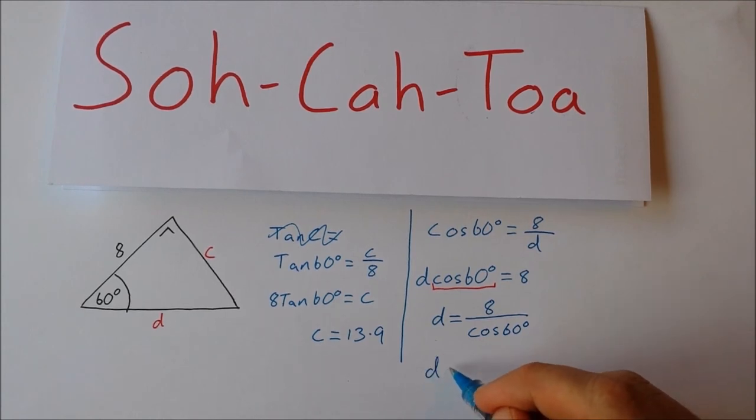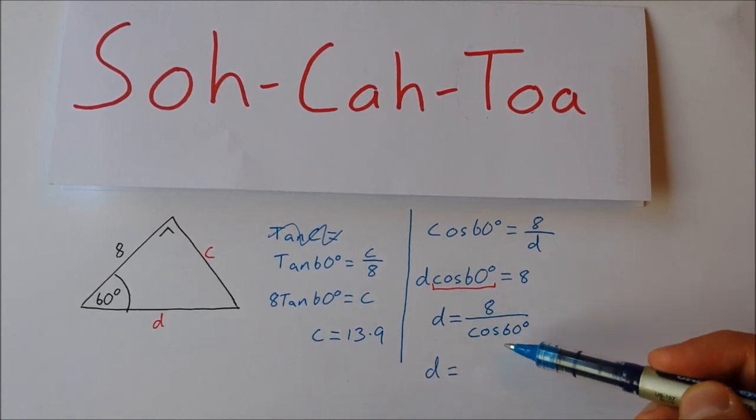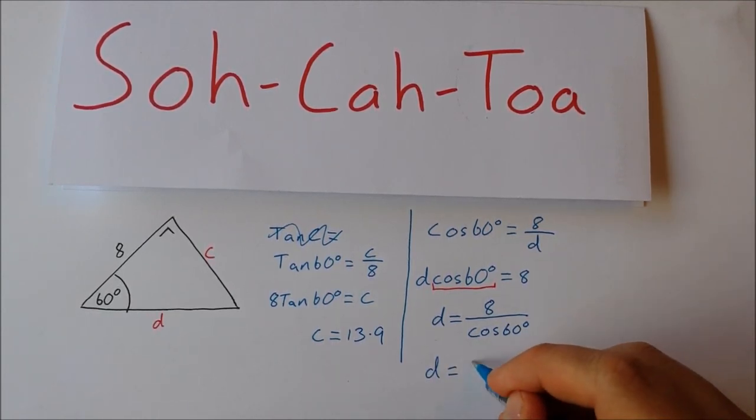And now you can put that into your calculator: 8 divided by cos 60, and you should get 16.